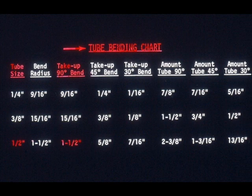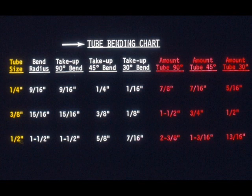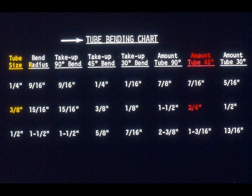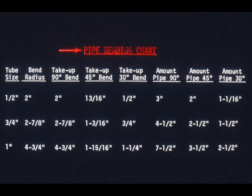For instance, the take-up for a ninety-degree bend in a half-inch tube would be one and one-half inches. The take-up for a thirty-degree bend in a quarter-inch tube would be one-sixteenths of an inch. The last three columns cover the amount of tube required for the three size bends. The pipe bending chart immediately below the tube bending chart is used in exactly the same manner. They both will save you time and effort, since you won't have to figure out the dimensions yourself.